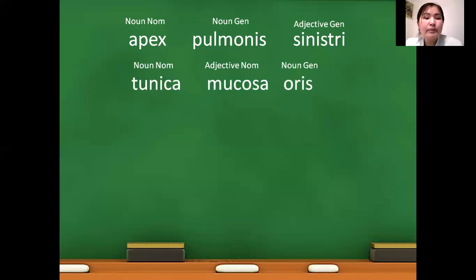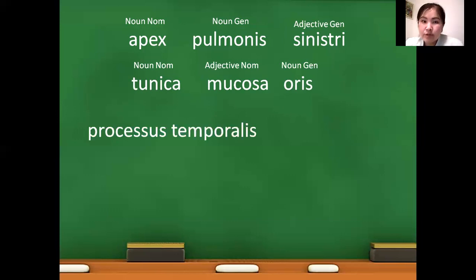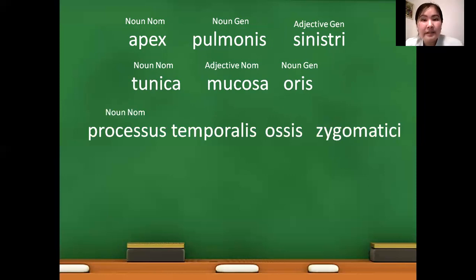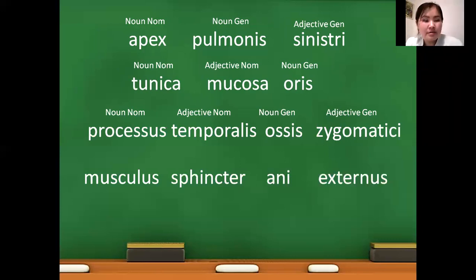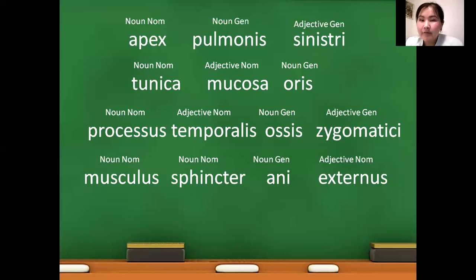In the next example, tunica mucosa oris: tunica is the noun in nominativus form, mucosa is an adjective in nominativus femininum, and oris is a noun in genitivus form. Or processus temporalis osis zygomatici: in this term we have two nouns and two adjectives. Processus temporalis — noun and adjective both used in nominativus form; osis zygomatici — noun and adjective used in genitivus form.